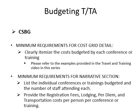For CSBG TNTA, the minimum requirements for the cost grid detail are that you must clearly itemize the costs budgeted for each conference or training. Please refer to the examples provided in the training and travel videos in this series. The minimum requirements for the narrative section are that you must list individual conferences and trainings budgeted, the number of staff attending each, and provide registration fees, lodging, per diem, and transportation costs per person for each conference or training.